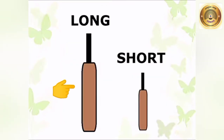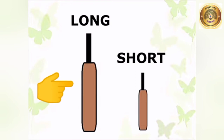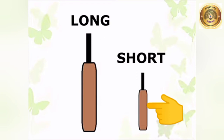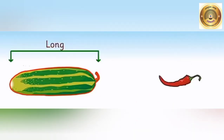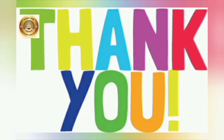Children, see here — two bats. One is long and one is short. Why is this one long? Because its length is more, so it is long. And why is this one short? Because its length is less, so it is short. Have you understood what we mean by long and short? Long means big in height, and short means small in height. Children, please practice at home. Thank you.